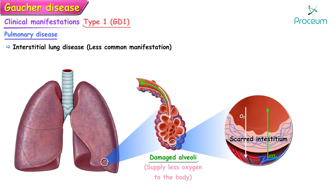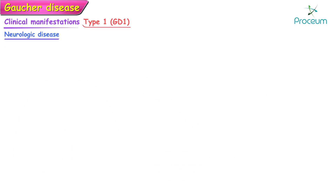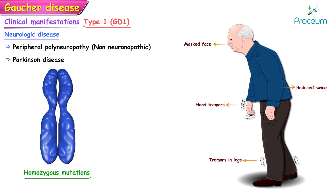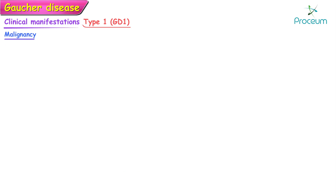Many affected children grow poorly and have delayed puberty. Interstitial lung disease is a less common manifestation; when it occurs, Gaucher cells infiltrate the alveolar spaces and interstitium. Neurologic manifestations such as peripheral polyneuropathy are reported even in Type 1 Gaucher's disease. It is also associated with Parkinson's disease — both homozygous and heterozygous mutations in GBA1 are associated with Parkinson phenotypes that are earlier in onset and more progressive than non-Gaucher-associated Parkinson's disease.